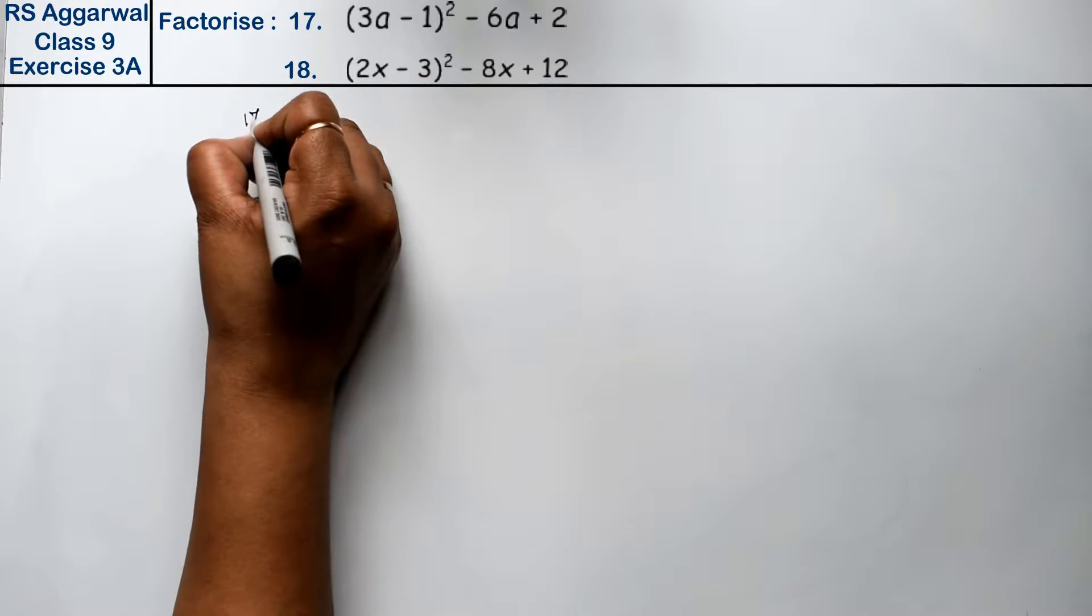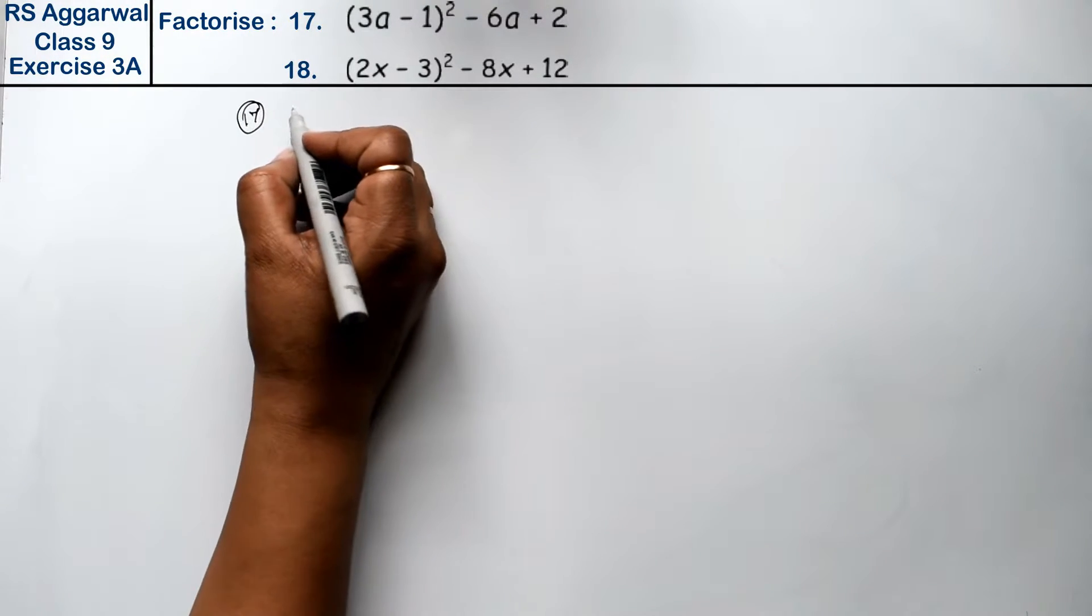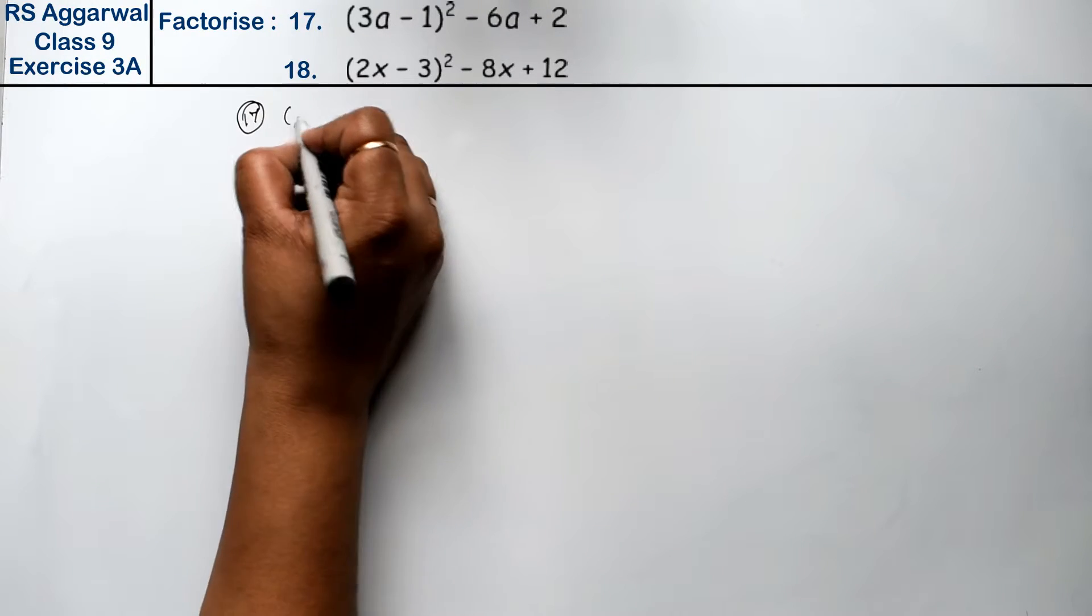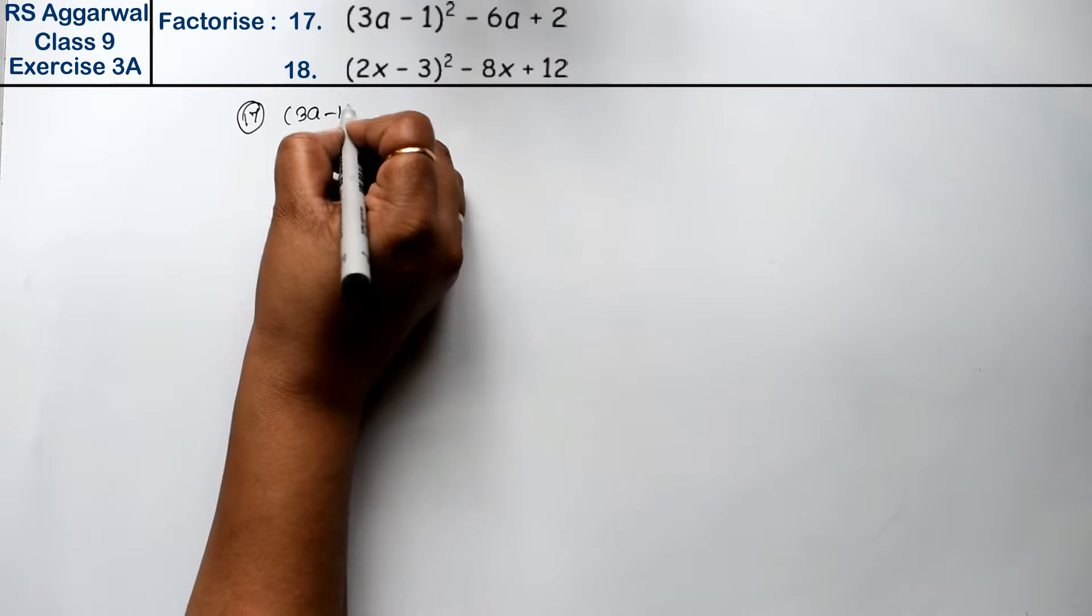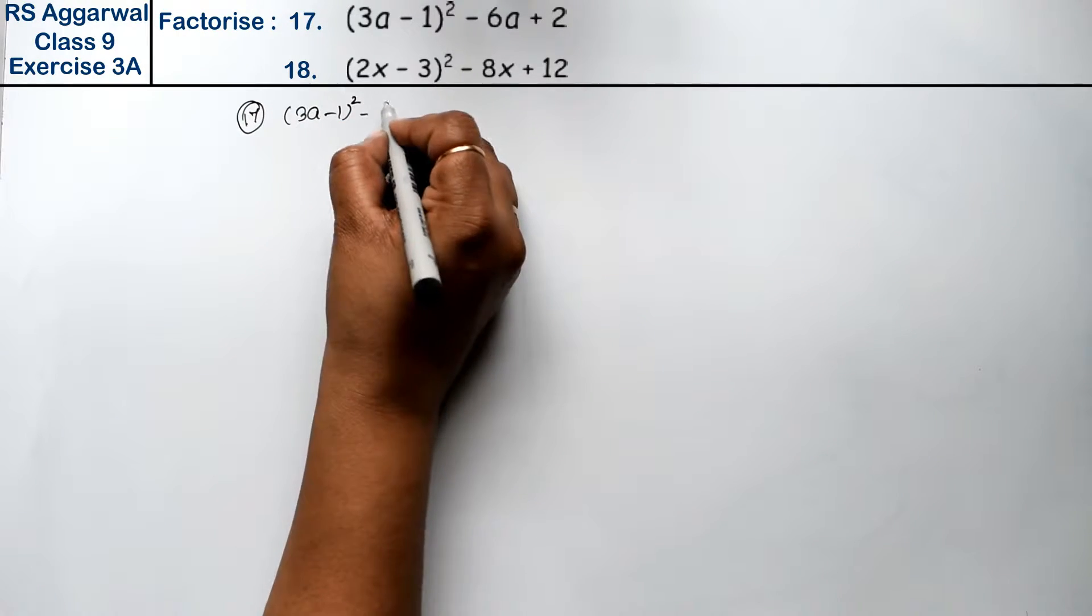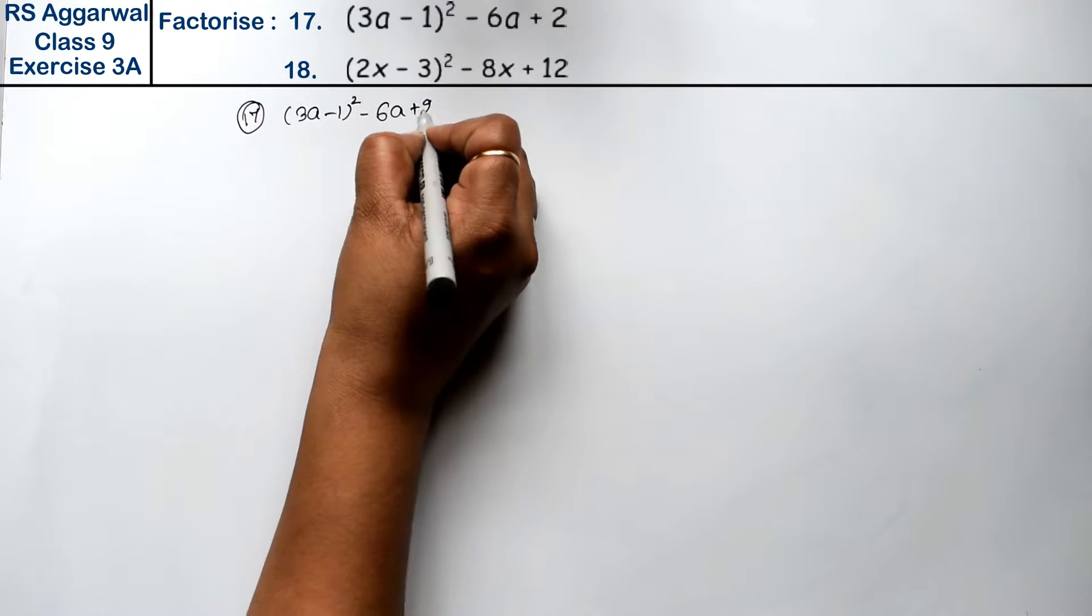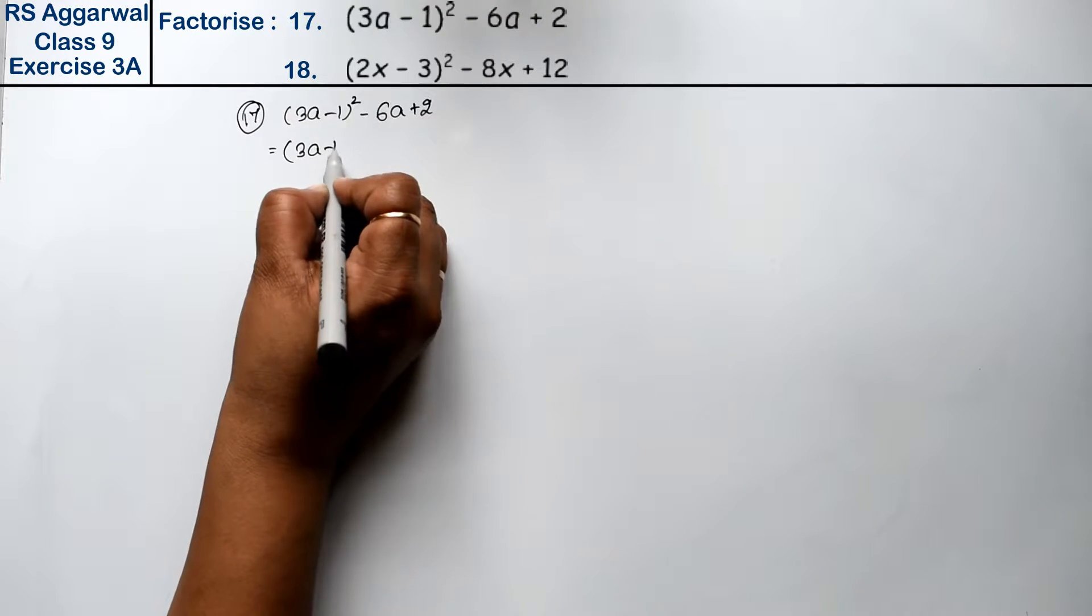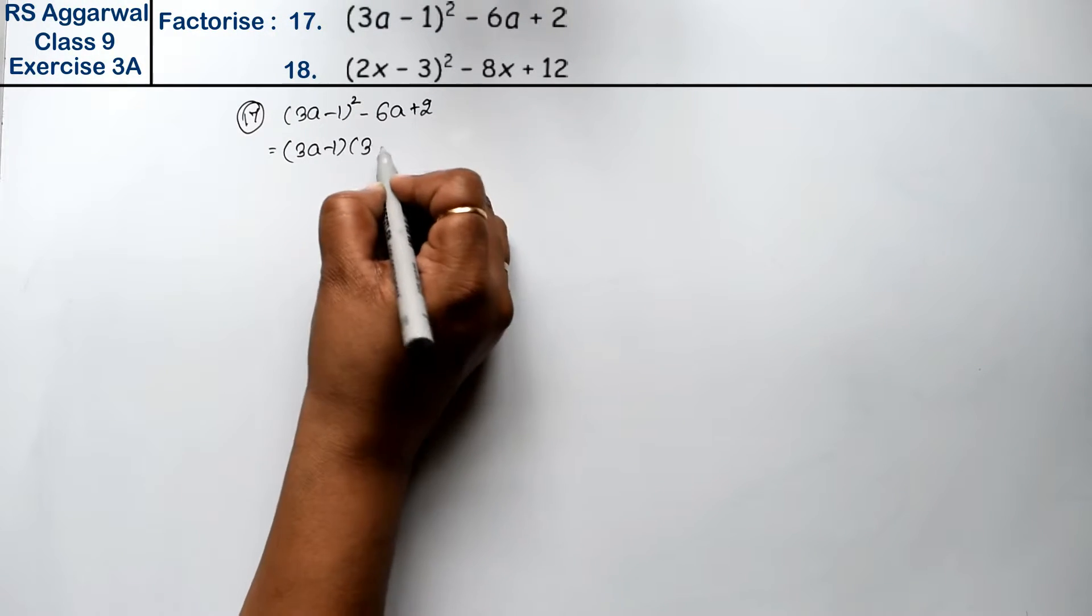Let's do question number 17 of Exercise 3A, factorization of polynomial. Question number 17 is (3a - 1) whole square minus 6a plus 2. Now let's see, (3a - 1) squared means (3a - 1) times (3a - 1), and we can write 6a as 2 × 3 × a and 2 as just 2.